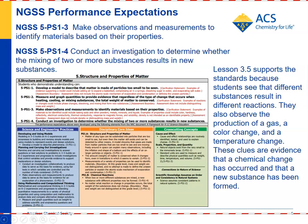For the NGSS standards, 5.PS1.3 asks students to make observations and measurements to identify materials based on their properties. And 5.PS1.4 asks students to conduct an investigation to determine whether the mixing of two or more substances results in new substances. Lesson 3.5 supports these standards because students see that substances react in a characteristic way — which is actually a property of the substance — and that they can identify substances by how they react. In the course of the investigation, students mix substances and see that new substances are produced: in both cases a gas is produced, there's a color change, and there's a change in temperature.